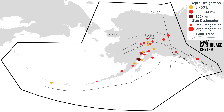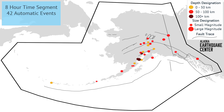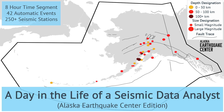Imagine it's Monday morning — you walk into the office, sit down at your desk, and find a map of the state of Alaska with circles representing earthquakes. For a seismic data analyst, a map like this represents one 8-hour time segment of seismic data. This particular map has 42 automatically detected events, recorded on over 250 seismic stations located across the state. Your job is to refine these automatic solutions. This is A Day in the Life of a Seismic Data Analyst, the Alaska Earthquake Center Edition.